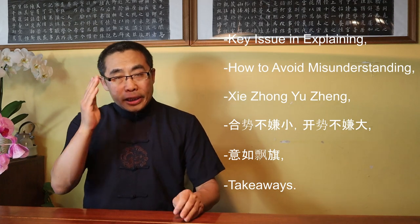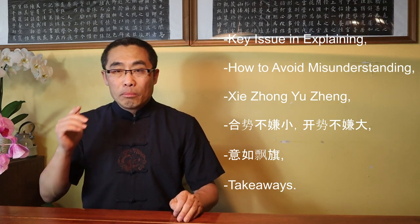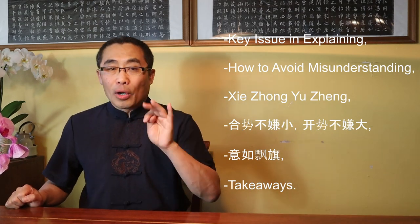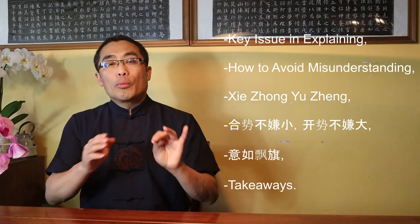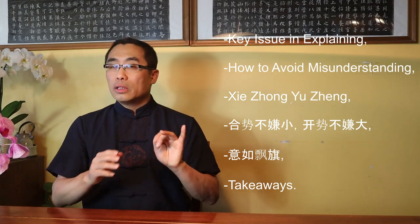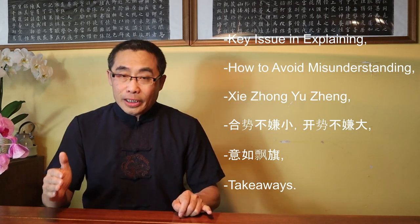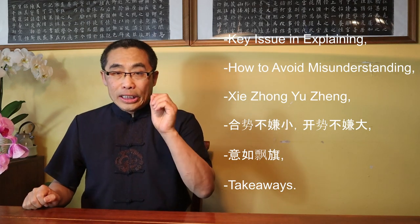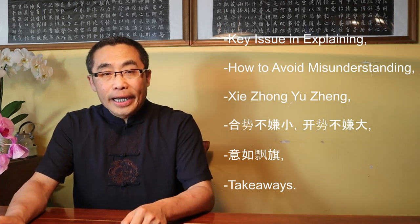With that, let's now decode three important martial proverbs. Topics covered in today's video include, First, key issue in explaining Chinese martial art proverbs. Second, how to avoid misunderstanding a proverb. Topic 3, Proverbs 1, Xie Zhong Yu Zheng. Topic 4, Proverbs 2, He Shi Bu Xian Xiao, Kai Shi Bu Xian Da. Topic 5, Proverbs 3, Yi Ru Piao Qi, and Topic 6, Take Aways. So without any further ado, let's get started.